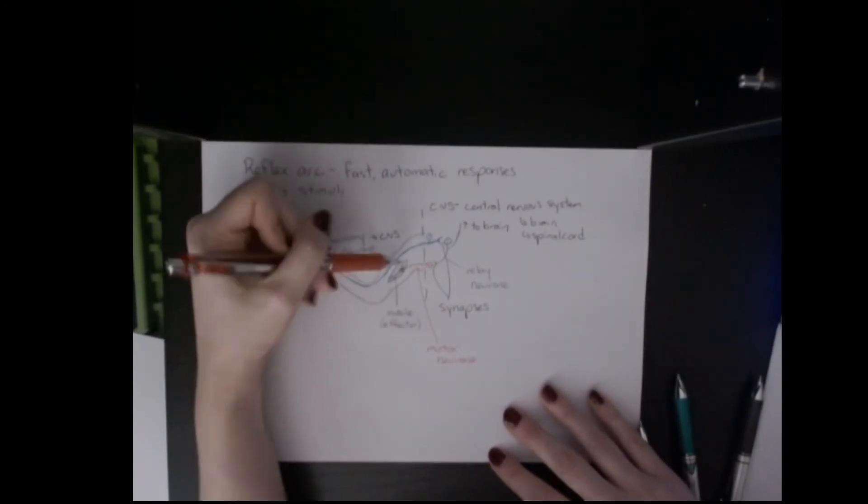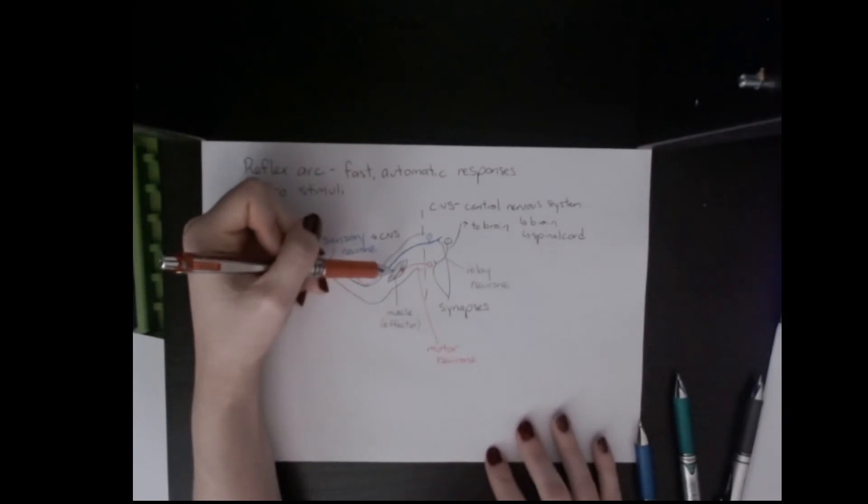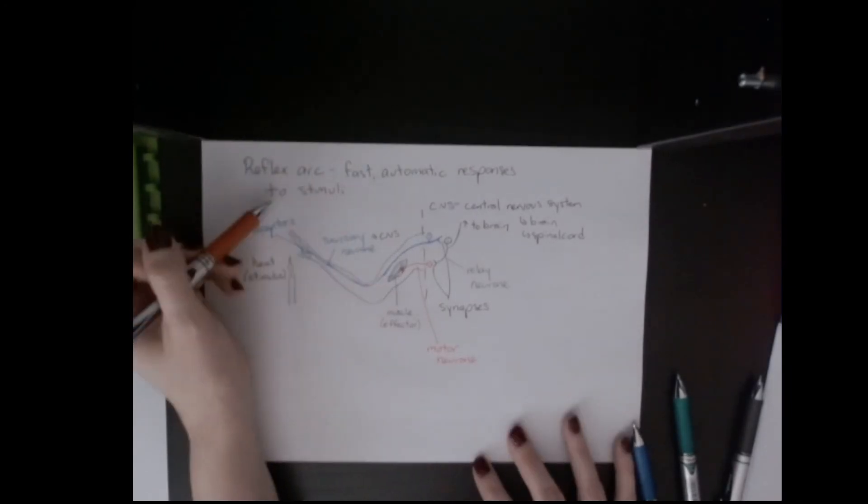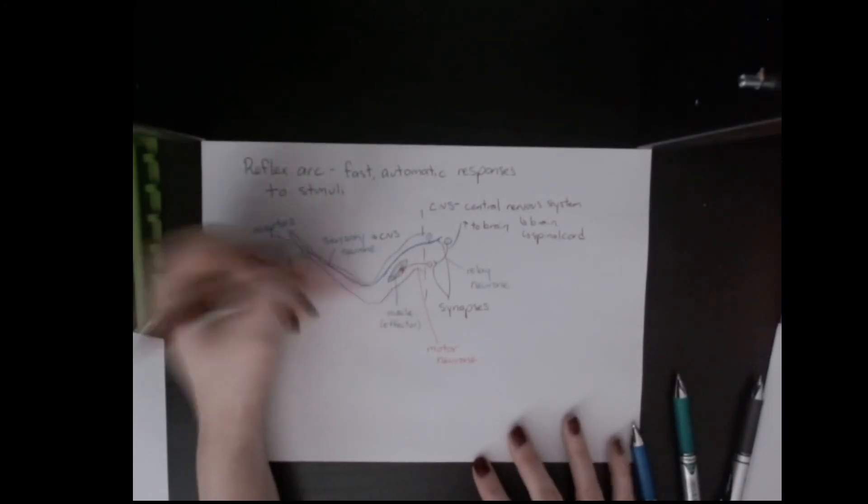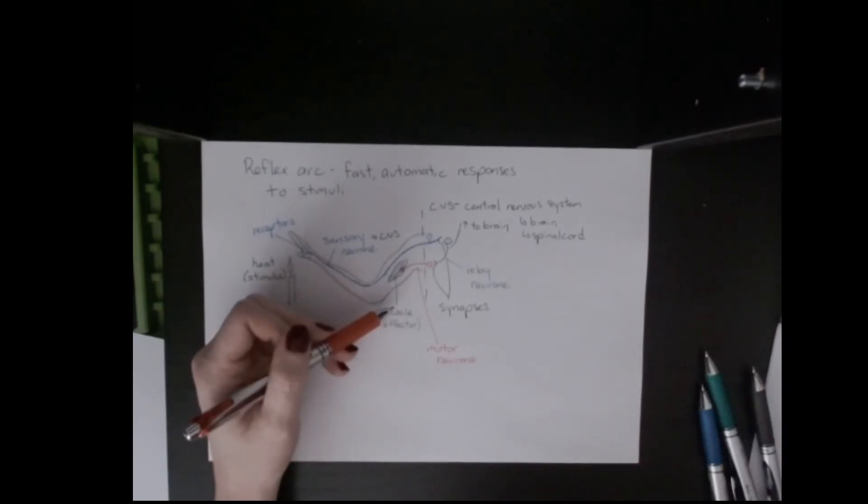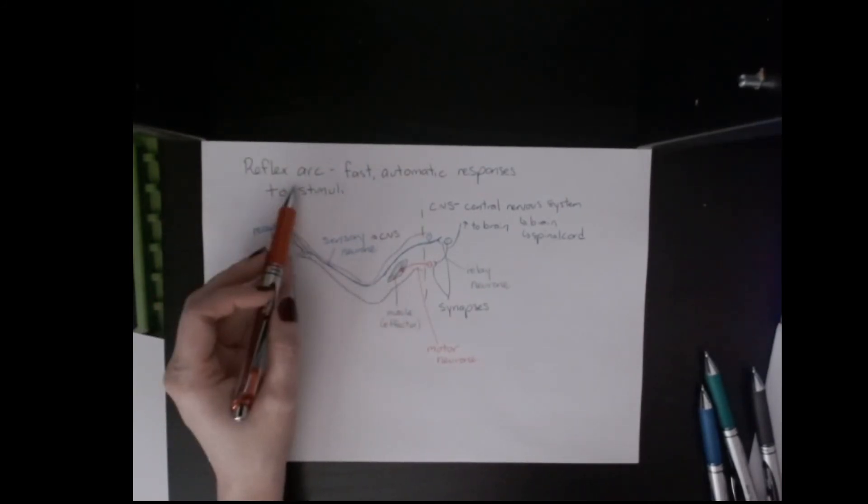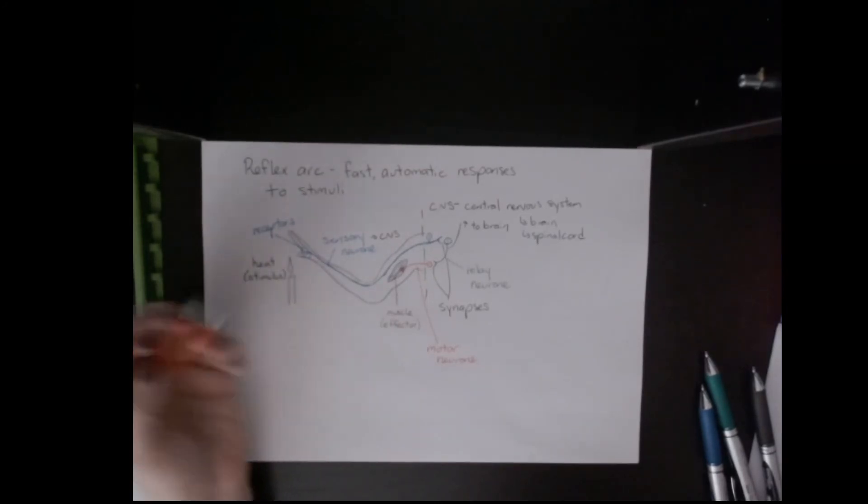The motor neuron is attached to the effector, which in this case is the muscle. For all reflex arcs, many of them have muscles as the effectors. If not, sometimes it's a gland - so for example, the release of adrenaline is part of a reflex arc as well, and so the effector in that case is the gland.